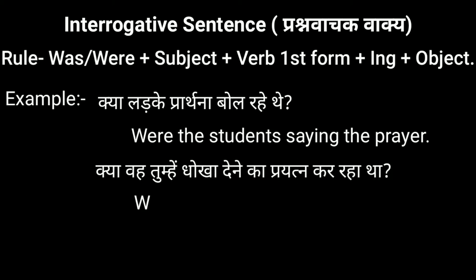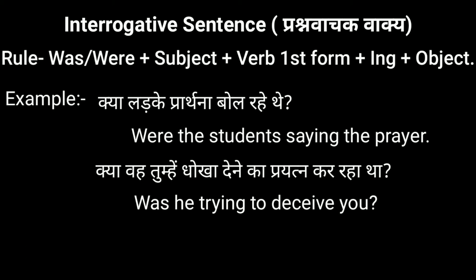Our second example: 'क्या वह तुम्हें धोखा देने का प्रयत्न कर रहा था?' — 'Was he trying to deceive you?' In this, 'was' is the helping verb, 'he' is the subject, and 'trying' is the verb first form plus ing.